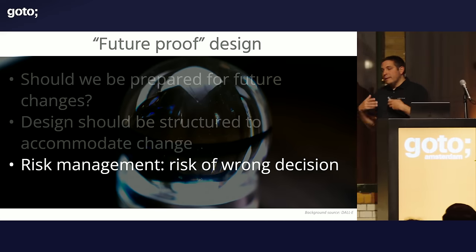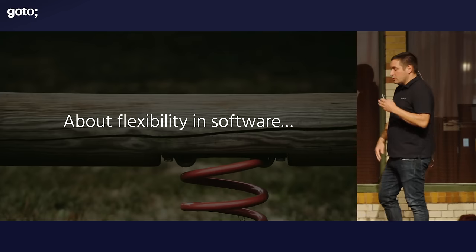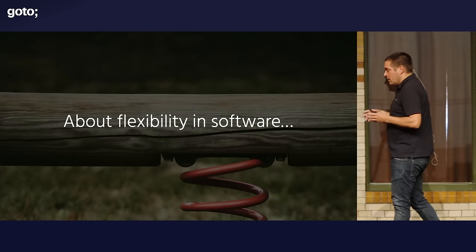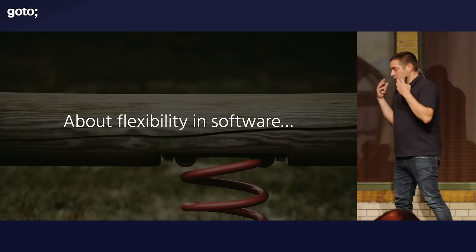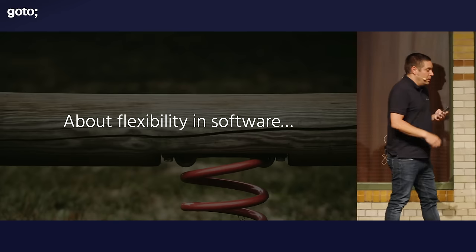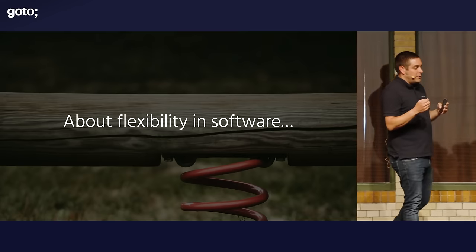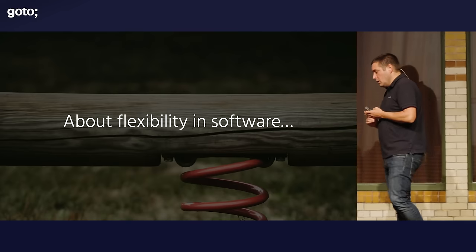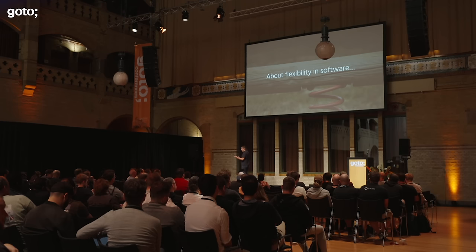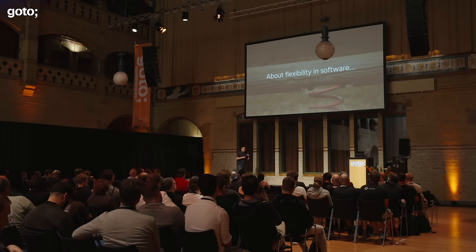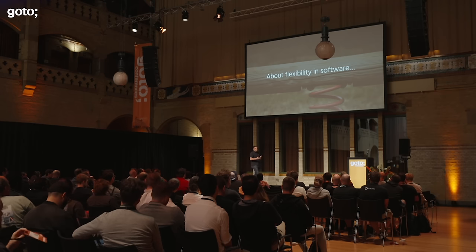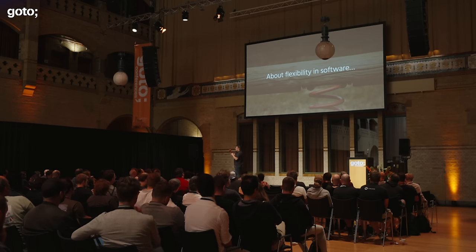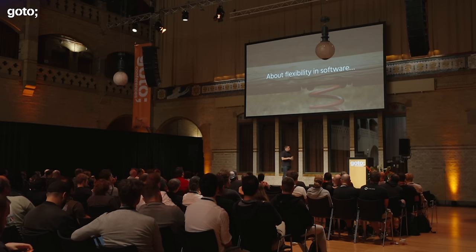I have an example to explain future-proofing: a story about flexibility in software. I was working for a company doing software for governmental agencies — systems typically written out to the public as tenders. The system had been designed by two information architects who had made specifications for the entire system. Their experience was that software was hard to change. One of the client's wishes was that the software should be easy to change. So in order to fix this, they designed a really flexible system.